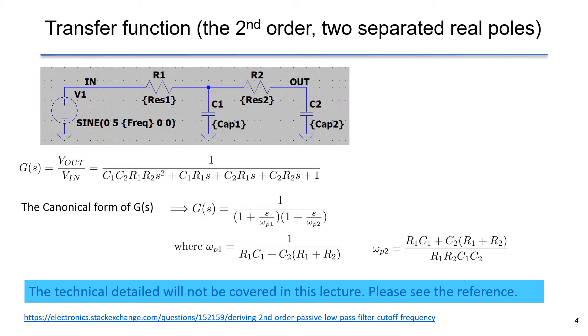If you want to know how to choose R and C in the design of the second-order low-pass filter, the transfer function can help you and give you more insights into the circuits. In this circuit, the transfer function G is Vout over Vin.